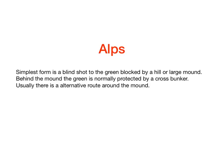The Alps hole was popular on old courses throughout Scotland, England, and Ireland. An Alps hole has a large hill or mound that blocks the view of the green. Between the hill and the green is normally a cross bunker. Most Alps holes are par 4s, but there may be par 5s. Although the most challenging shot — also the most rewarding — is to hit over the hill to the green, an alternative safer route around the hill or mound exists.